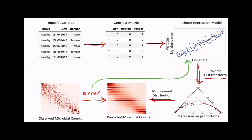The linear regression component will help us understand the difference between microbes due to the covariates we have measured. The inverse CLR transform will help us model proportions using standard linear regression. The multinomial distribution will help us model zero counts where traditional compositional data analysis tools will struggle. At this point, we have provided a high-level architecture of how modern differential abundance tools are built. Next, we'll discuss how to choose parameters when running these models, how to evaluate the accuracy of your model, and how to interpret the underlying model parameters.